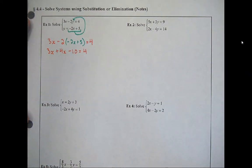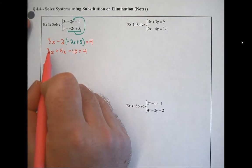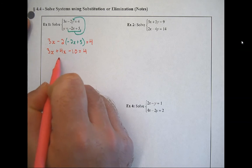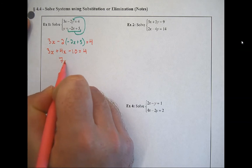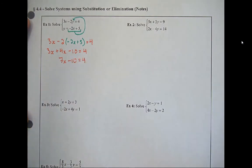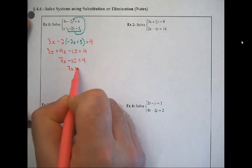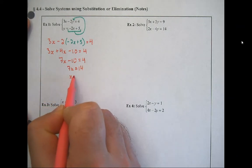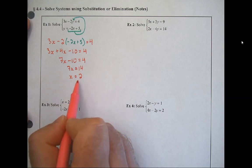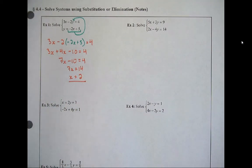The worst part of this equation is the parentheses, so we get rid of them by distributing. Negative 2 times negative 2 is positive 4x, and negative 2 times 5 is negative 10. Now we have too many x's, so we combine them — 3x plus 4x is 7x. Then we start solving: bump over the 10, divide by 7, and we get x equals 2. I underlined that — didn't box it in — because the solution to a system is a coordinate pair.